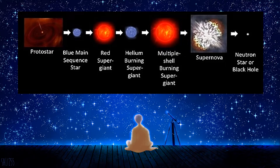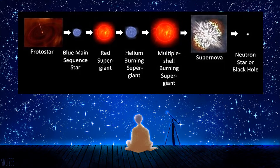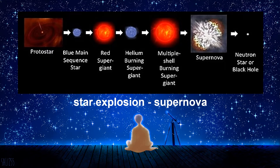Elements lighter than iron can be fused because when two of these elements combine, they produce a nucleus with a mass lower than the sum of their masses. The missing mass is released as energy. Therefore, the fusion of elements lighter than iron releases energy. However, this does not happen to iron nuclei — rather than releasing energy, the fusion of two iron nuclei requires an input of energy. Therefore, elements lighter than and including iron can be produced in a massive star, but no elements heavier than iron are produced. When the core can no longer produce energy to resist gravity, the star is doomed. Gravity squeezes the core until the star explodes and releases a large amount of energy. This star explosion is called a supernova.